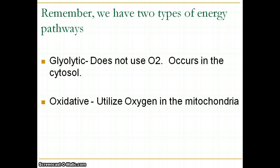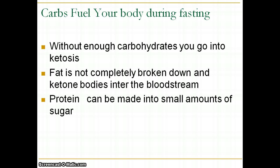To summarize: the glycolytic pathway does not use oxygen, occurs in the cytosol, is fast but not sustainable. The oxidative pathway utilizes oxygen, happens in the mitochondria, is slower but sustainable for a very long time.